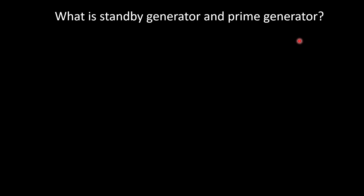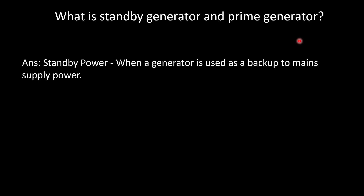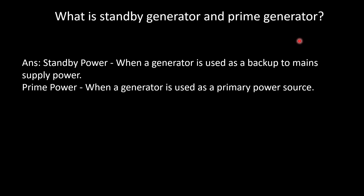What is a standby generator and what is the difference between prime and standby generators? A standby generator is used as a backup when the main power supply fails. A prime generator is used as the primary power source. In normal cases, the primary power source is the supply from the power supply company. In some high luxury projects, clients may insist on a prime generator as backup — that is an exceptional case. In general cases, standby generator is for backup and prime generator is for the primary power source.